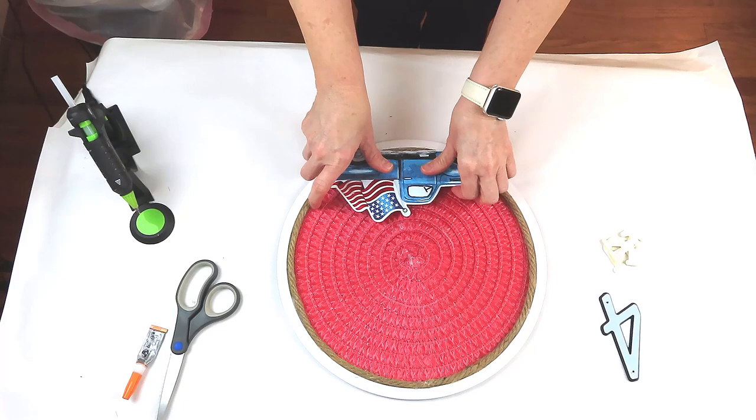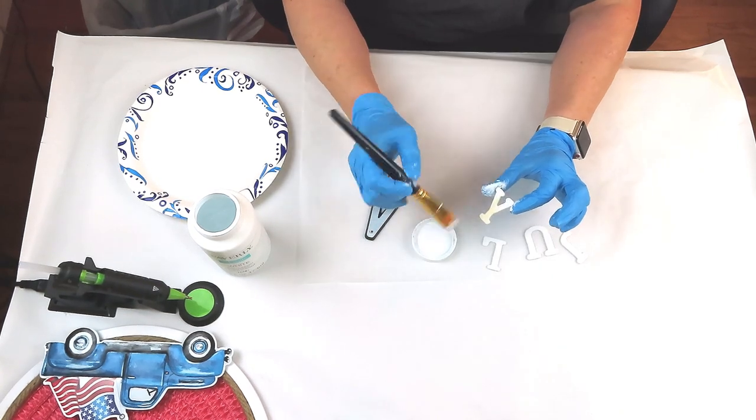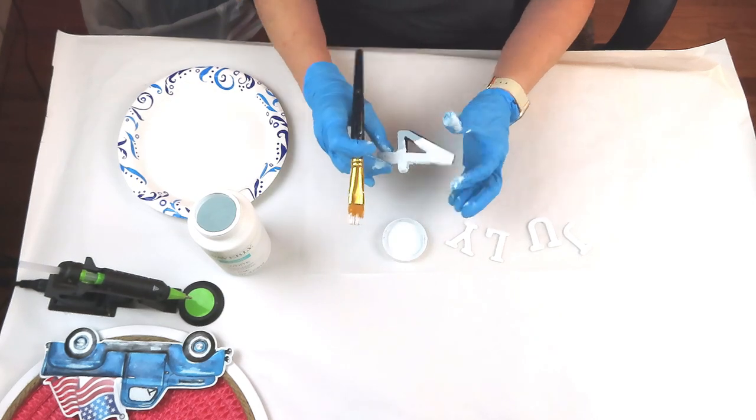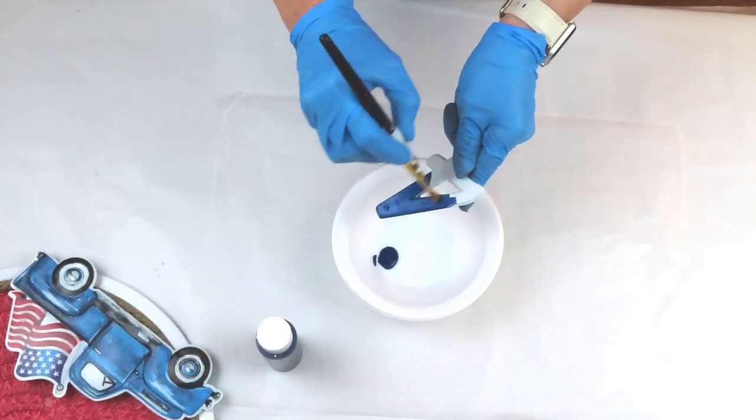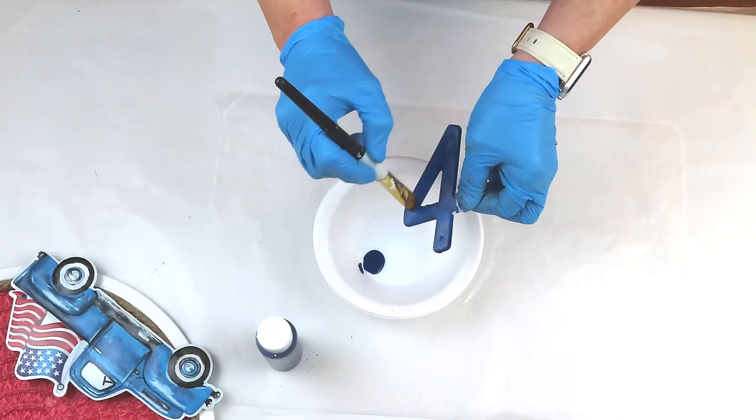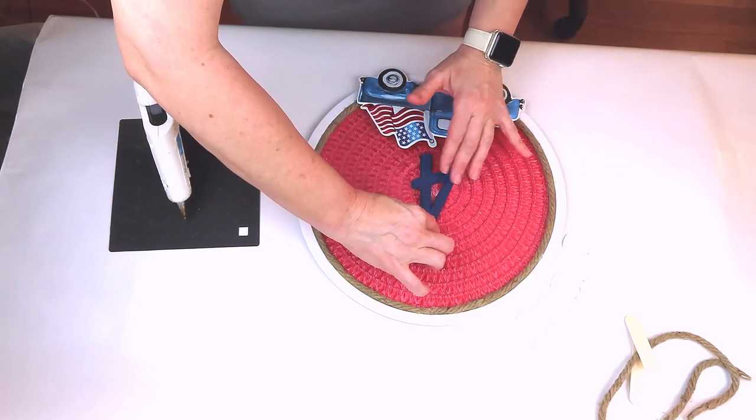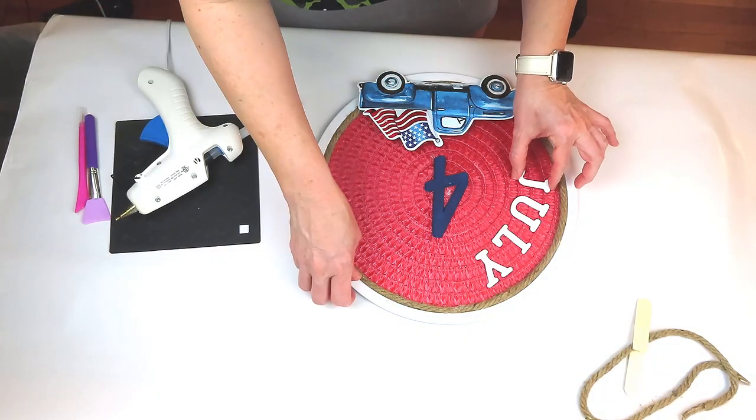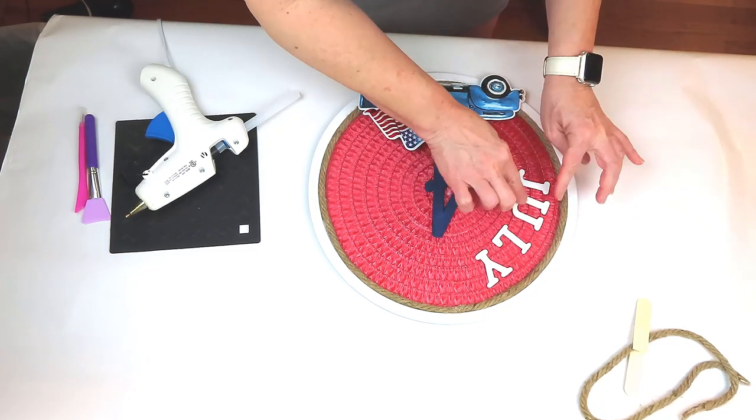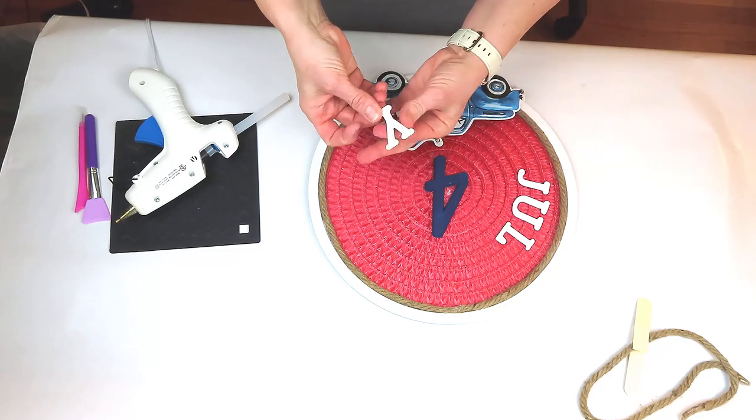Then I just set that to the side and let it set up while I painted the word July and the number four. The number four that I'm going to be using is actually meant to go in your house so it has the two holes in it so I just used hot glue, put just a tiny bit in each one, sanded it down until it was smooth and then I am giving it two coats of the Waverly chalk paint and then I'm going to go in and give it two coats of the Admiral blue because I want it to have really good coverage.